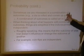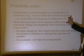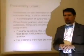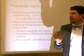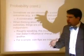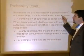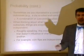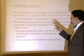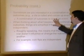Sometimes we're interested in a combination of outcomes, such as rolling a die and getting an even number. That means you want a 2, a 4, or a 6. There are 6 sides and 3 possible successes, so the probability of getting an even number would be 3 out of 6.